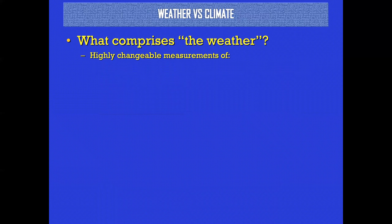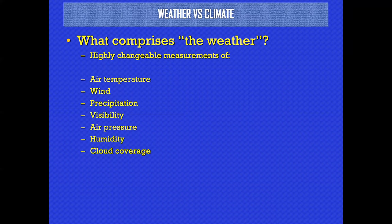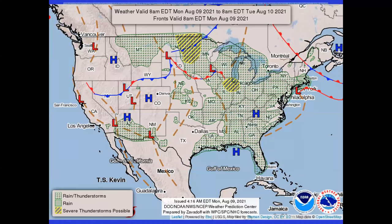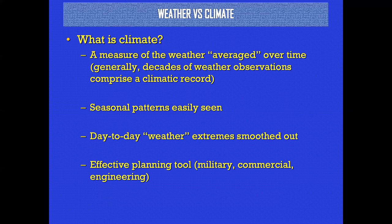Weather — what is weather? What's the definition of weather versus climate? Weather is the highly changeable measurement of atmospheric conditions: what's it going to be like tomorrow, how about next week, is it going to rain, how much snow are we going to get — that's weather. Climate on the other hand is the average of weather, usually averaged over decades. By taking many many observations and averaging them out, you can see seasonal patterns — when to expect rain, which month is your wettest, when do you typically get snow.